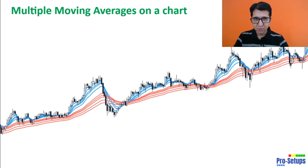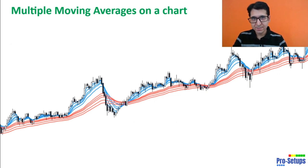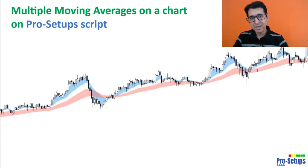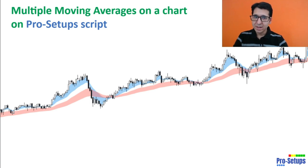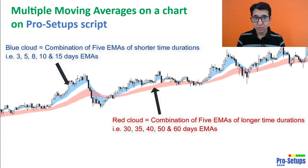On the chart you can see 10 different lines which are nothing but EMAs. The blue EMA lines are of shorter time durations and the red lines are of longer time durations. If you use the Pro Setup script, these EMAs will take the form of clouds. The blue cloud is the EMAs of shorter time durations — a combination of five multiple moving averages. The red cloud is a combination of five higher duration moving average EMAs.